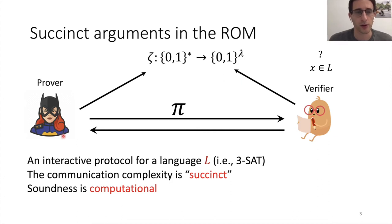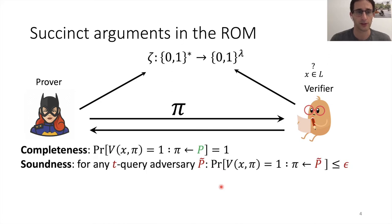What is magical about these protocols is that the communication complexity is what's called succinct. It's extremely short and in particular, much shorter than the size of the witness. The soundness is computational, meaning the following two requirements. We have completeness: there exists an honest prover that can convince the verifier that X is in the language with probability one. And for soundness, if X is not in the language, then no matter what adversary you choose, if it makes up to T queries to the random oracle, the probability that it wins and convinces the verifier is at most epsilon.